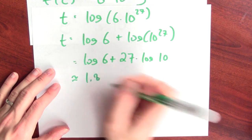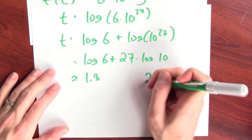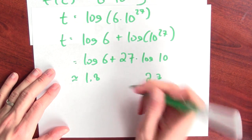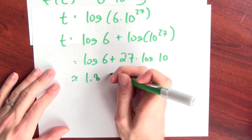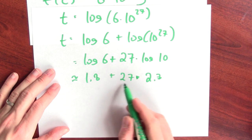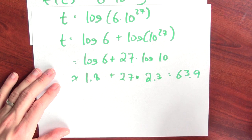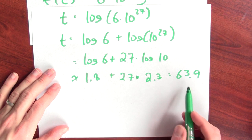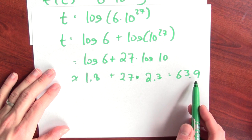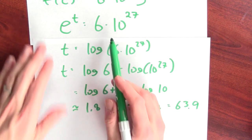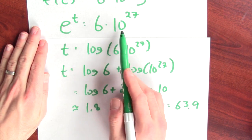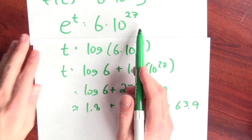I can approximate these. Log of 6 is about 1.8, and log of 10 is about 2.3. I've got 1.8 plus 27 times 2.3. That's 63.9. And this is in seconds. You've got 63.9 seconds until the amount of gray goo is about 6 times 10 to the 27th grams.